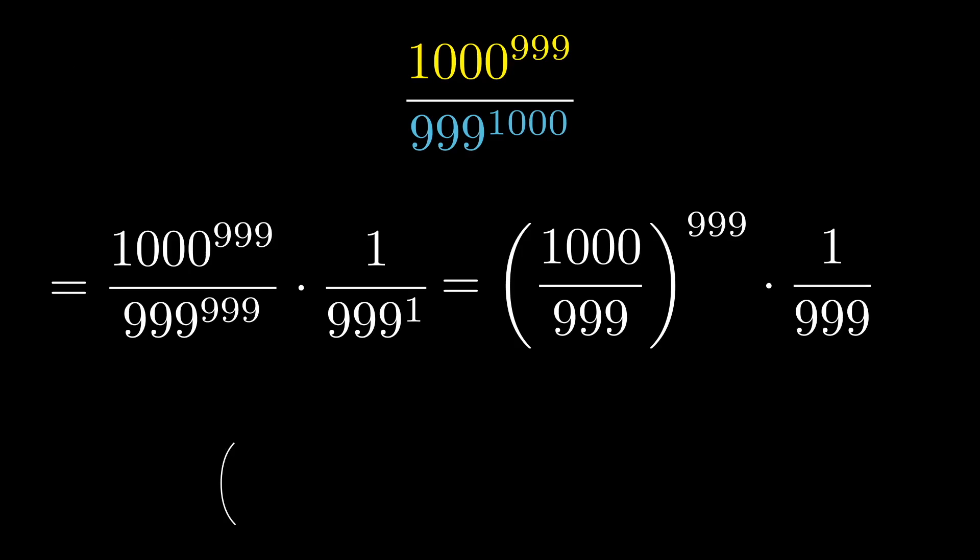Fortunately enough, it's not too hard to reduce this improper fraction, 1,000 over 999, whether you want to do some long division or be slick with your fractions, just splitting up 1,000 into 999 plus 1, and splitting this into two fractions, you'll get 1 plus 1 over 999.